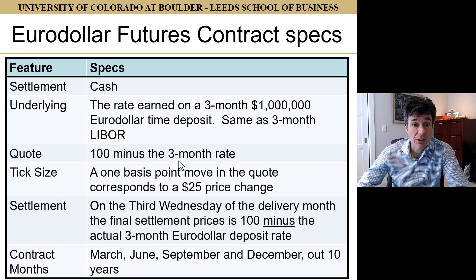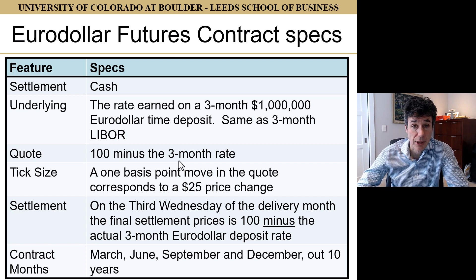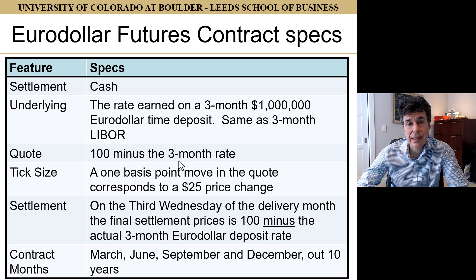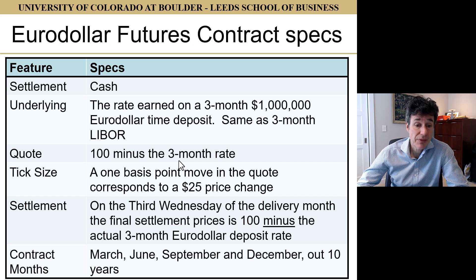This is seen as the same as three-month LIBOR. This is cash settled. The quote is $100 minus the three-month rate. The tick size — the way this works — is a one basis point move in the quote corresponds to a $25 price change. Settlement is on the third Wednesday of the delivery month, and the final settlement price is $100 minus the actual three-month Eurodollar deposit rate. Contract months are quarterly: March, June, September, and December, out 10 years.